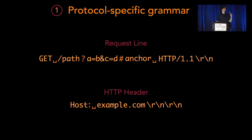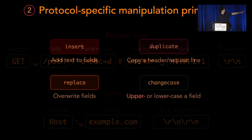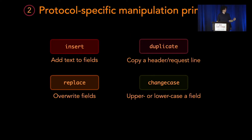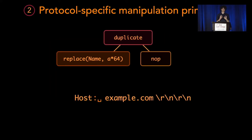We're going to do this in three steps. First, Geneva has to understand the protocol. For HTTP, we have a request line made up of a method, path, and version, and then arbitrarily many headers. We give this information to Geneva so it understands each field, and we define specific manipulation primitives: insert (insert text into a field), replace (replace text in a field), duplicate (take a header and make two), and change case (change the casing of a field). These are simple, but we can compose them to form strategies and be quite expressive.